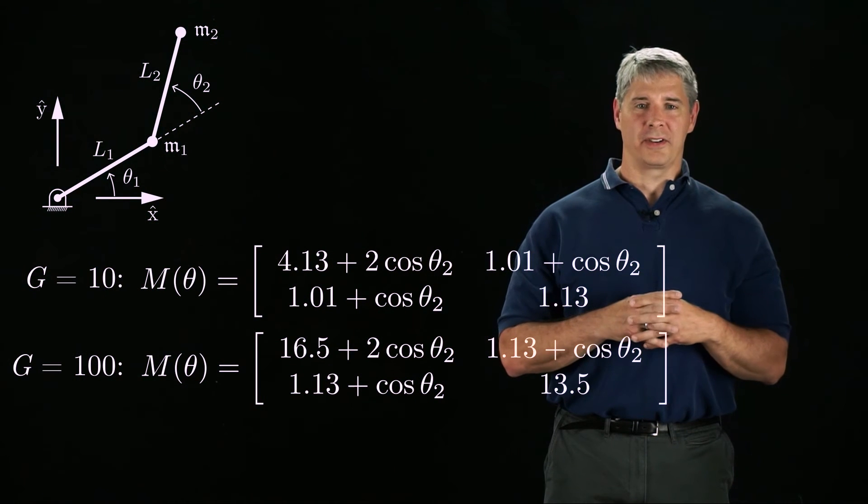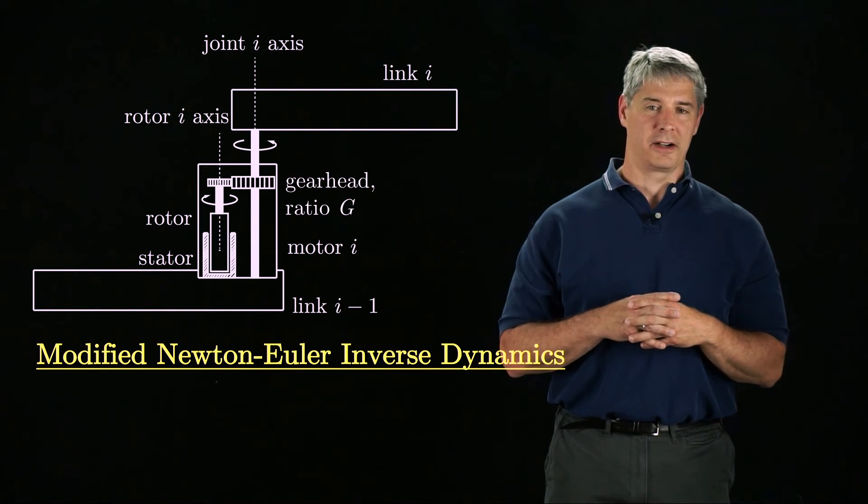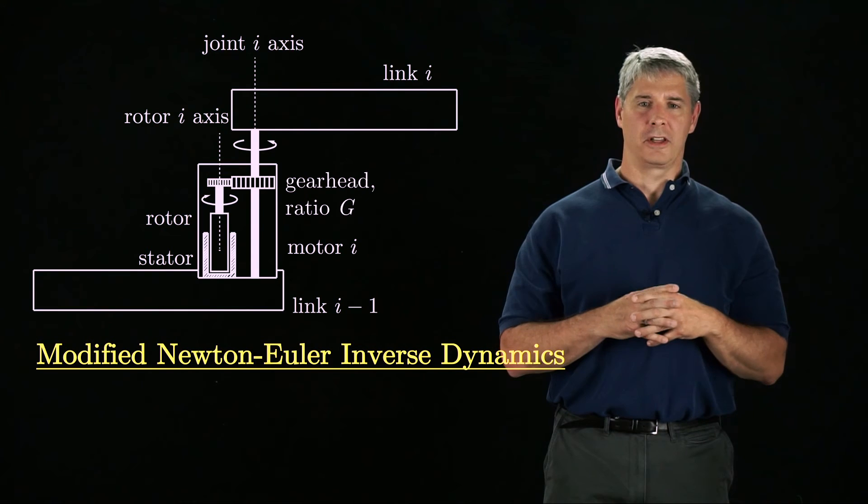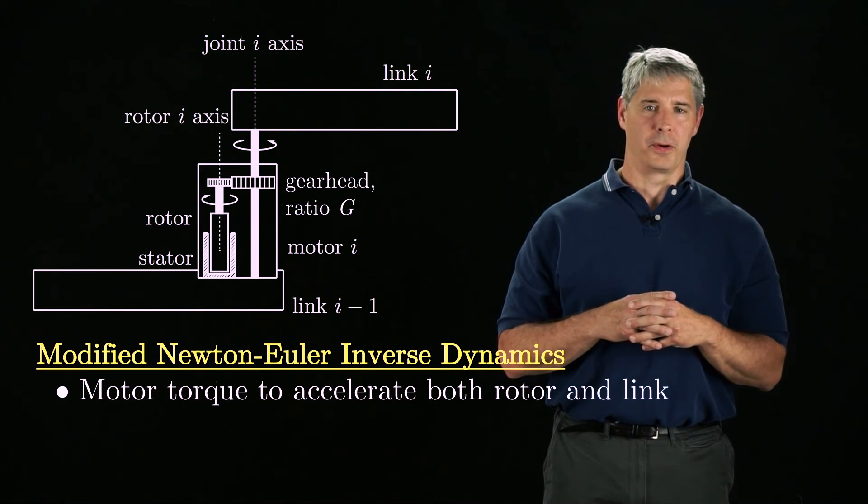Taking into account gearing at each joint, we can derive a modified recursive Newton-Euler inverse dynamics algorithm. The details are left to the book, but essentially we calculate the motor torque needed to accelerate both the rotor and the link.